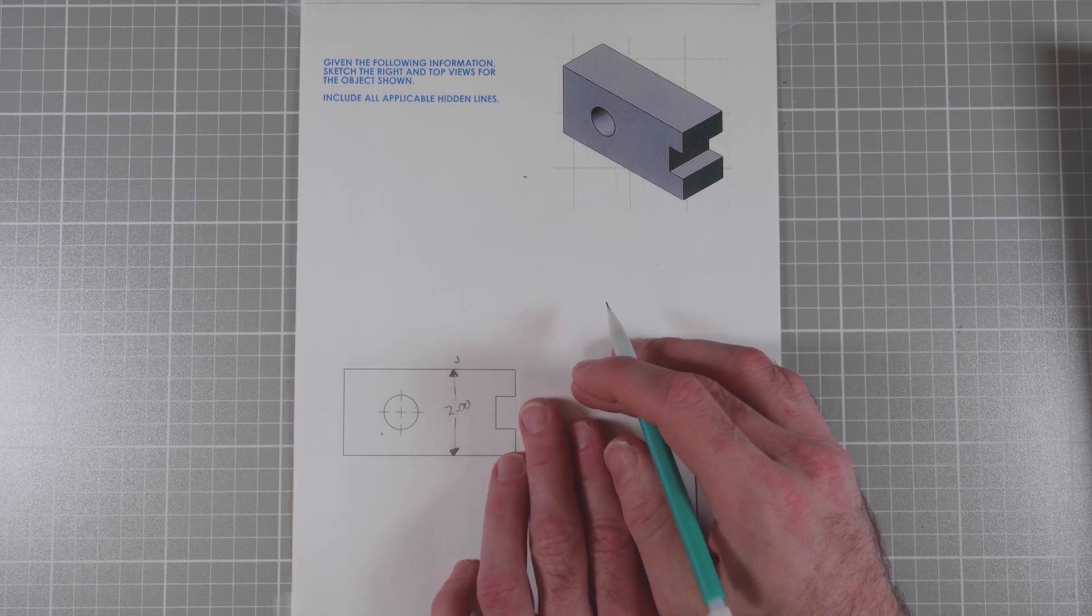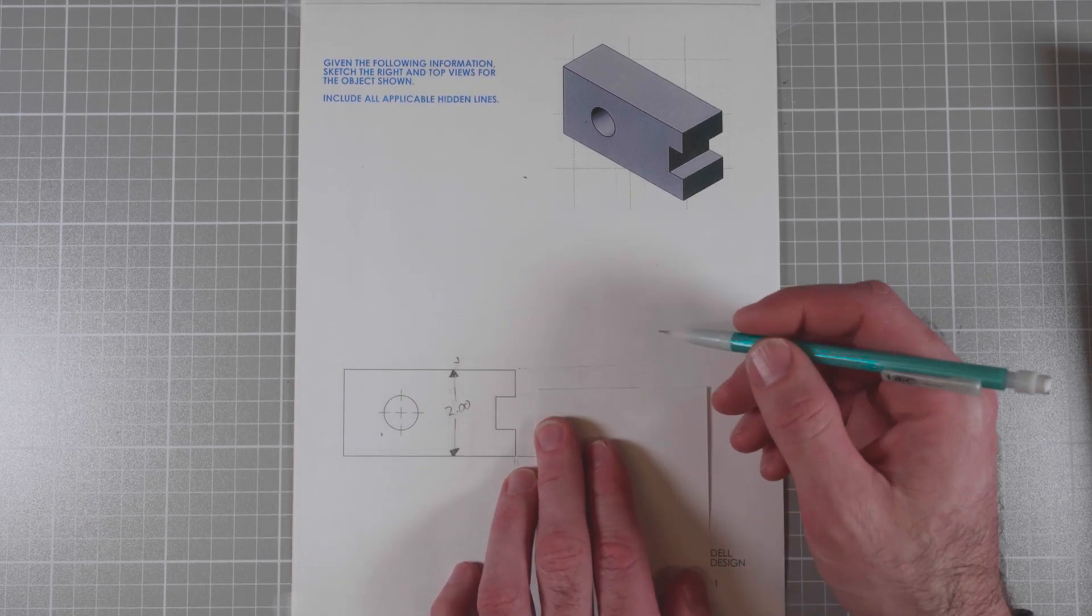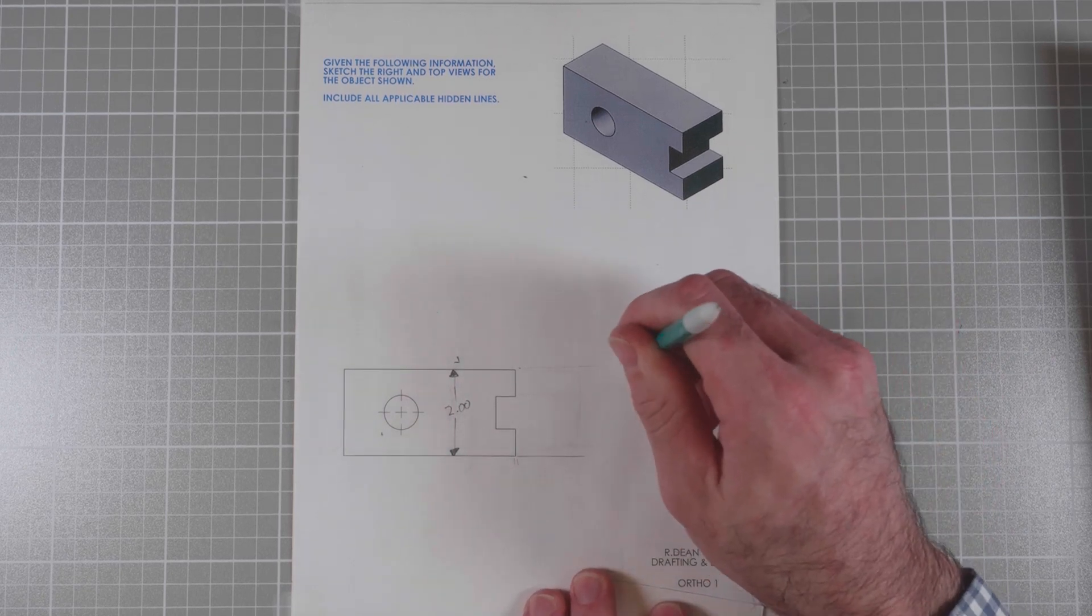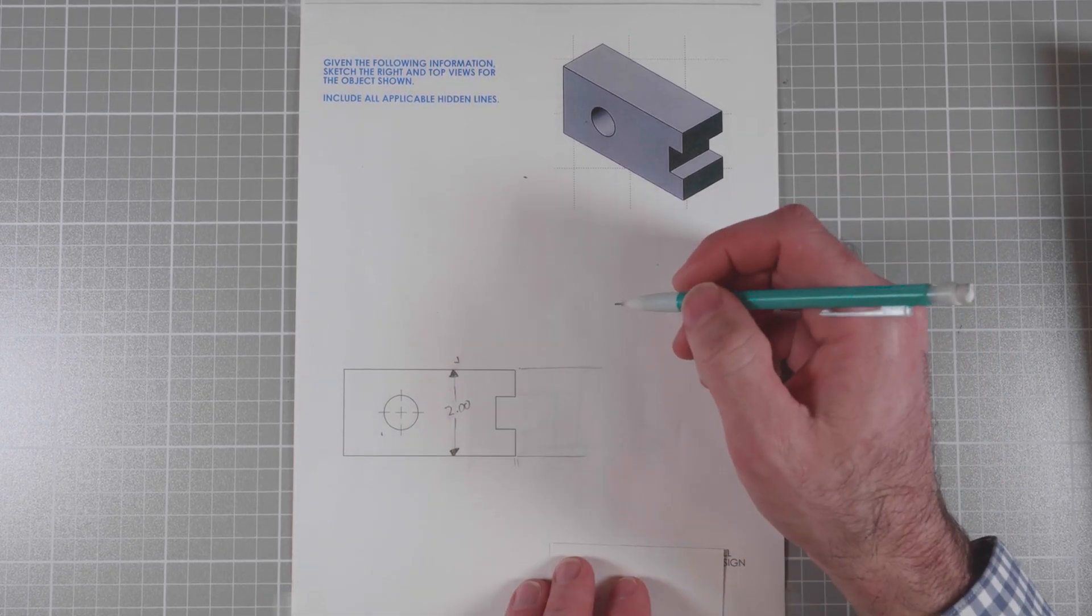It's important on any drawing that the gaps are all the same. If your CAD program picks a sixteenth, a thirty-second, an eighth inch, doesn't matter as long as they're all the same. If you have different gaps, then your drawing is going to look messy. I'll do the same thing up here. Come off of the part, leave a little gap, and draw a nice thin line.